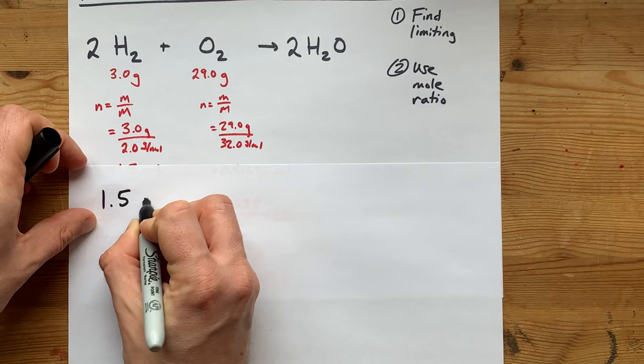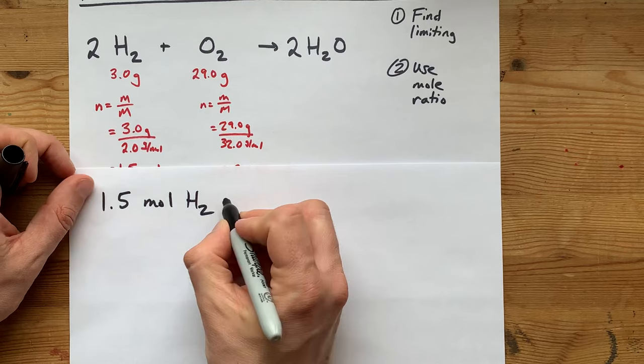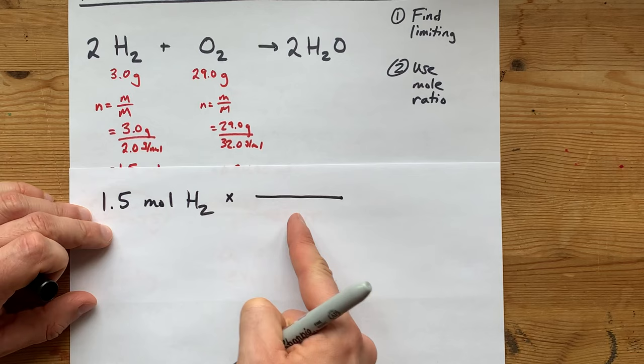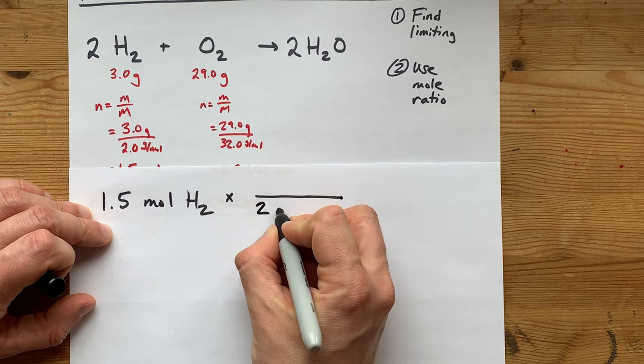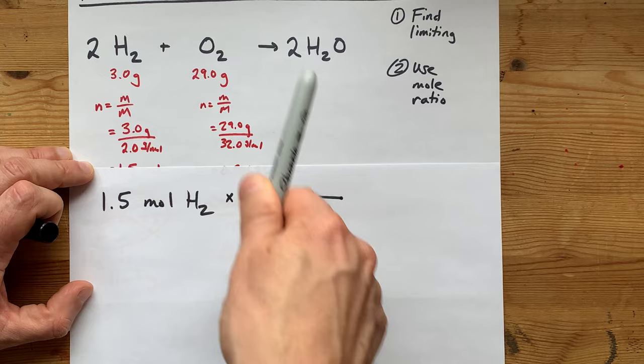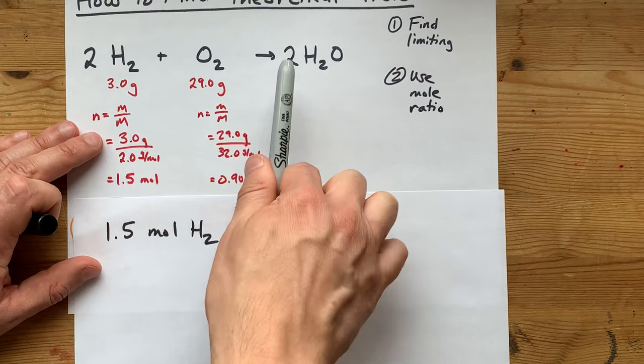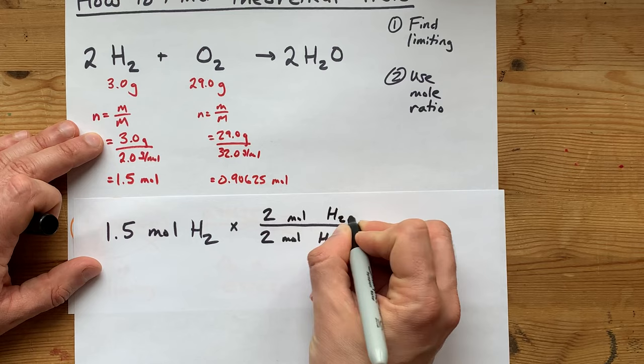Now, we started with 1.5 moles of hydrogen, and we're going to multiply that by a ratio. On the bottom, I want you to put the coefficient for hydrogen and the fact that it is hydrogen. And on the top, I want you to put the coefficient of the thing you're trying to find. Here, because we're looking for yield, we want to know how much water is made. So that's 2 moles of water in the numerator.